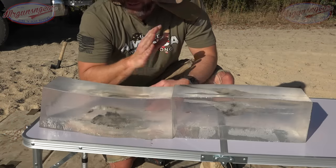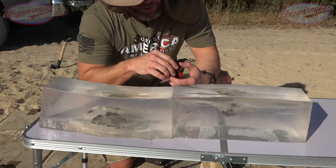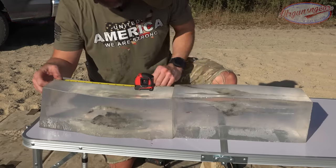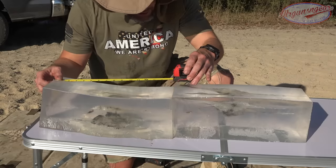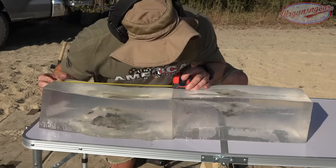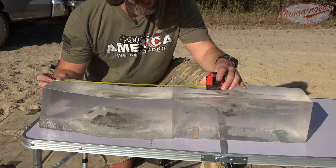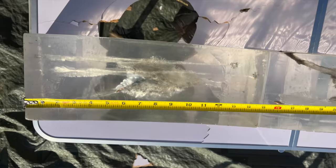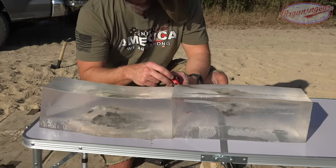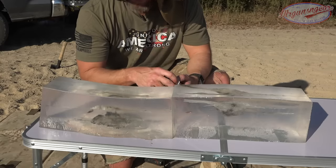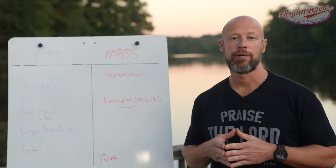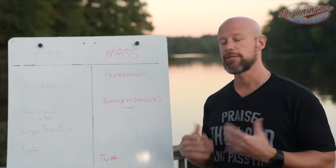Two very distinct wound tracks — exactly what I wanted to see. The M193 out of the 11.5 inch barrel came in and at right about the five inch mark it started to tumble. We have that permanent wound cavity going all the way down to the 13 inch mark, and then the bullet — all intact aside from a couple pieces of lead that broke off — stopped right at the 18 inch mark. Ideally you'd want it to tumble a little earlier, but that would still be a very effective round for a lot of different scenarios.